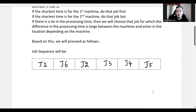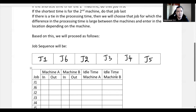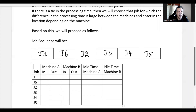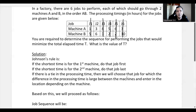Now we proceed to find the total elapsed time by creating a table with the sequence: Job 1, Job 6, Job 2, Job 3, Job 4, Job 5. For machine A, whenever any job starts, the initial time is considered to be 0.